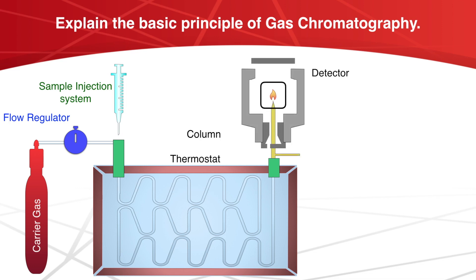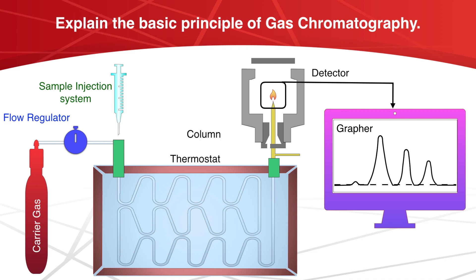And finally there are detectors. The carrier gas emerging from the column passes into the detector which gives an electrical signal. The signal response is proportional to the concentration of the substance present in the carrier gas. So these are the components of the gas chromatography.